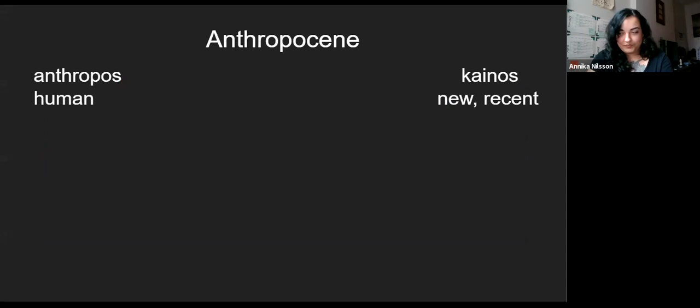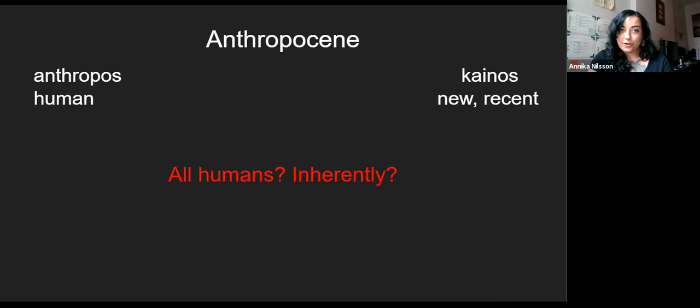The word Anthropocene comes from the Greek roots 'anthropos' and 'kyros,' which mean human and new or recent — 'age of humans' or 'age of man,' as it's often called. But it makes us wonder: are we actually talking about all people? Is this an inherently human problem? Let's get more specific.